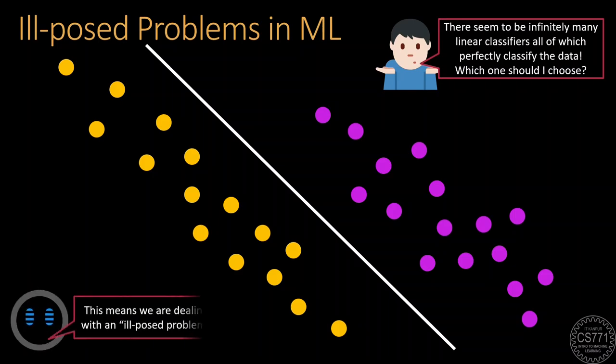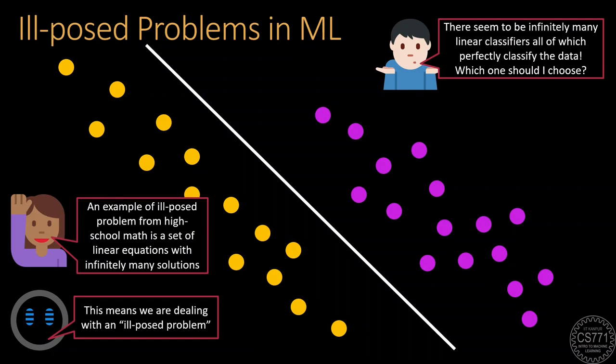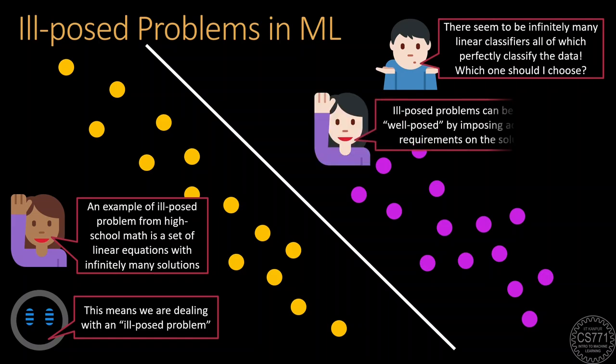You would have come across ill-posed problems in high school mathematics when you studied systems of linear equations that have infinitely many solutions. Whenever we encounter an ill-posed problem in machine learning, it usually means that our data is insufficient or deficient in some way. Thankfully, ill-posed problems can be made well-posed by imposing additional demands on the solution we seek.